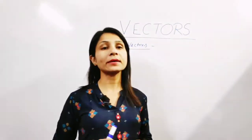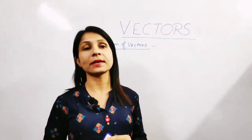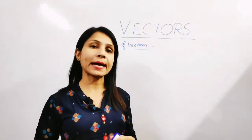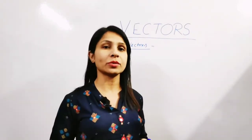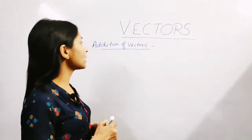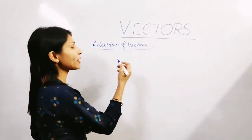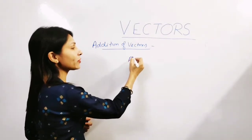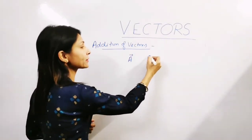First of all, you have to remember that the two quantities which have the same physical nature can be added. For example, force can be added to force only, and velocity can be added to the velocity component only. So now we will see how we add two vectors. Suppose I have two vectors, vector A and vector B.